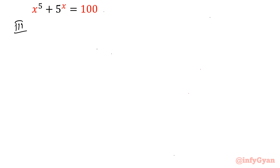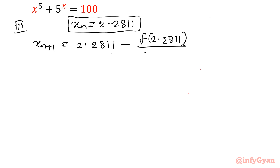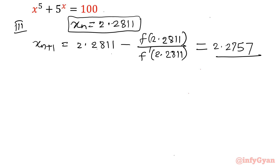Third iteration: x_n is equal to 2.2811, which we calculated in the previous stage. So x_(n+1) will be equal to 2.2811 minus f(2.2811) over f'(2.2811). If you put all the values, this value comes out as 2.2757. This is your third iteration.